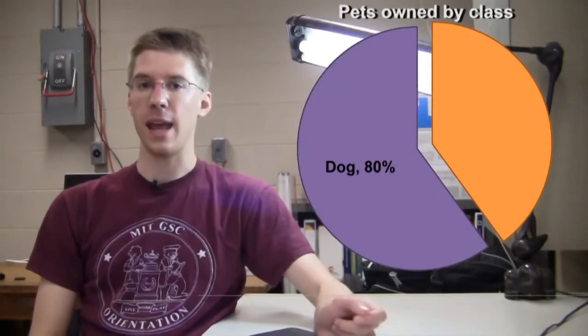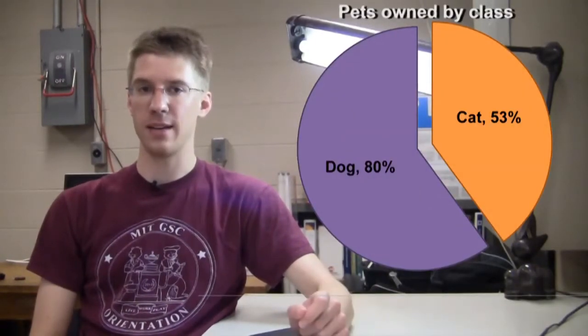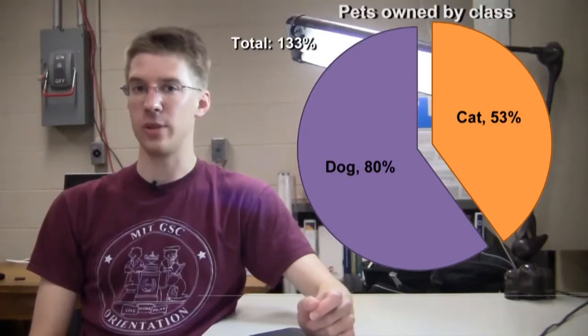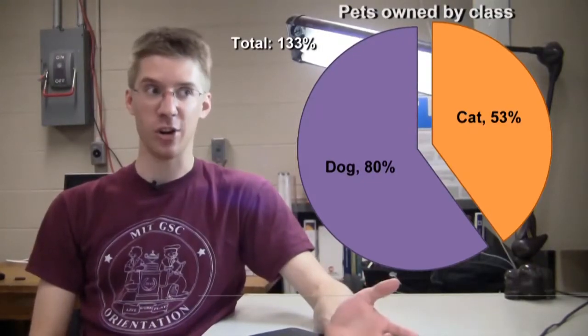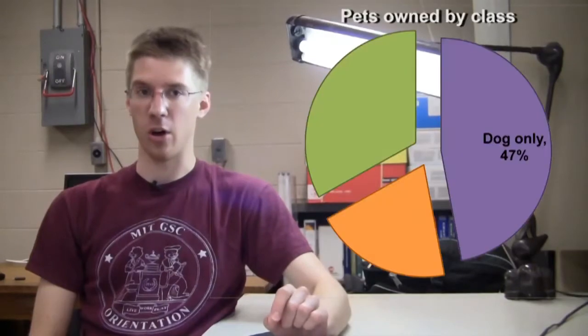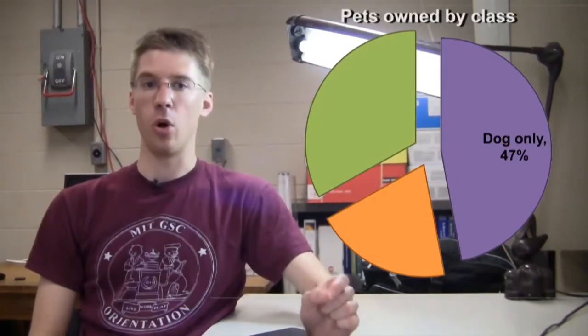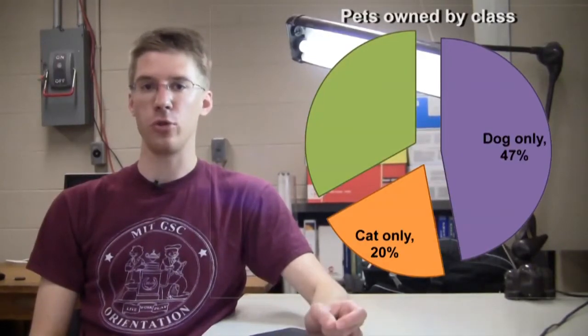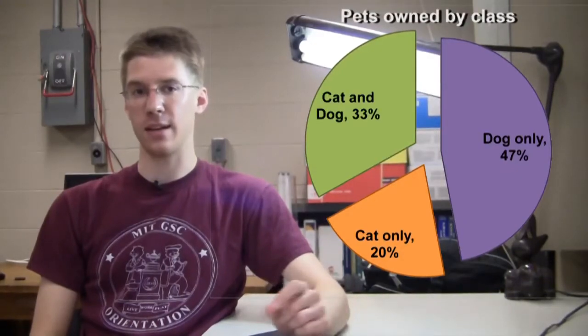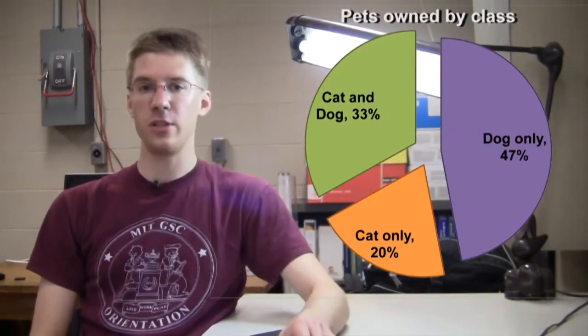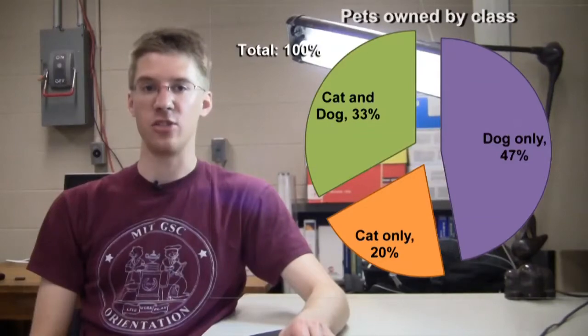For example, if you have a data set such as 12 students in a class own a dog and 8 students in a class own a cat and the class only has 15 students, then this pie chart is wrong. A better way to sort this data is to say 7 students own only a dog, 3 students own only a cat, and 5 students own both a dog and cat. That way, all 15 students are represented and the data sets do not overlap.